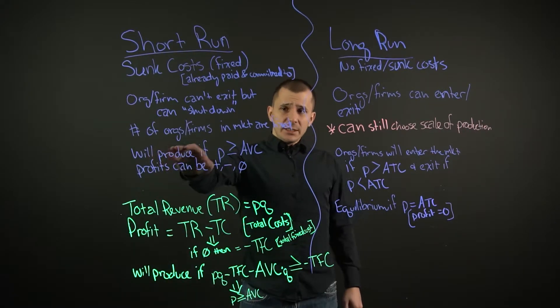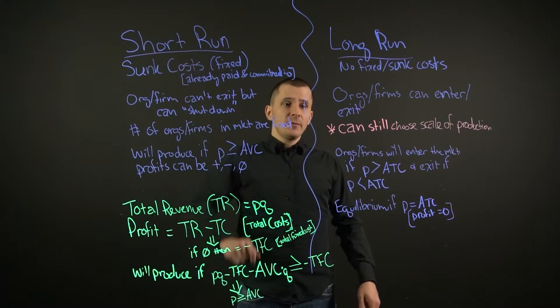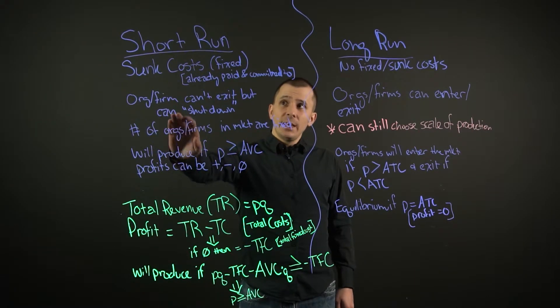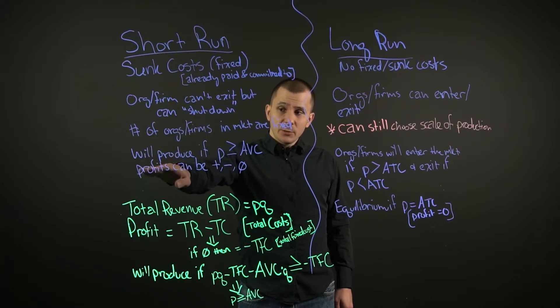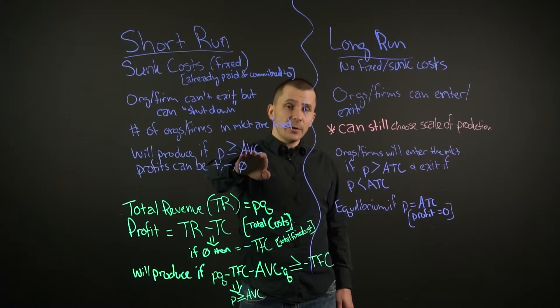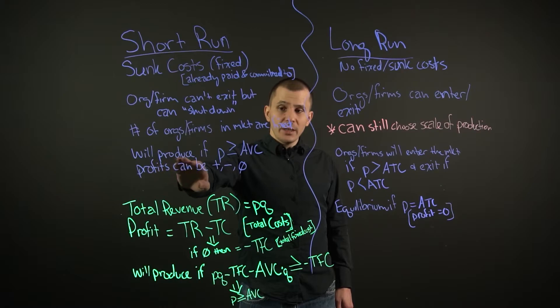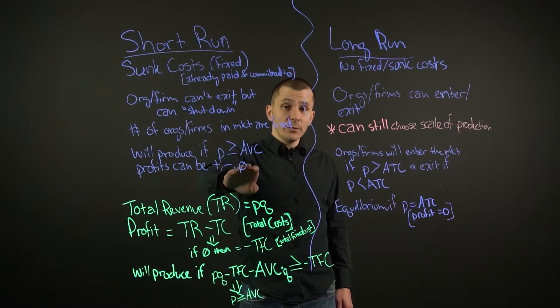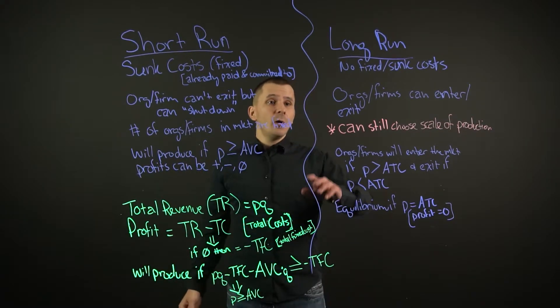Now, the number of organizations and firms in a market are fixed in the short run and also a short run situation will produce if price is greater than or equal to the average variable cost and profits over here can be positive, negative, or zero.